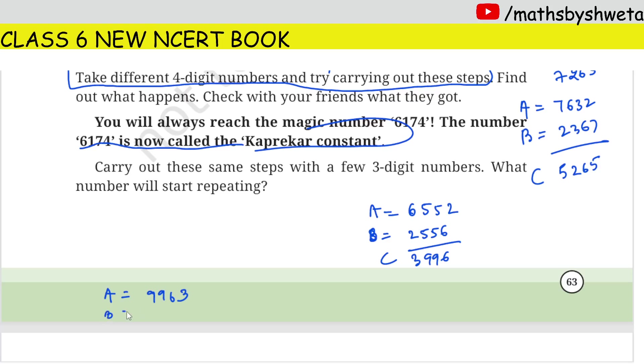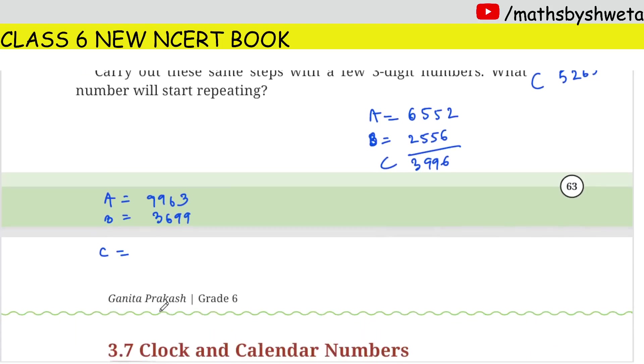Minus. I have the smallest number and minus. The number is 9, 9, 6, 3, 3, 6, 9, 9, 6, 2, 6, 4.